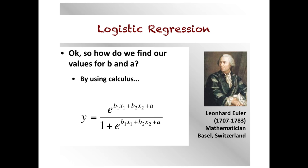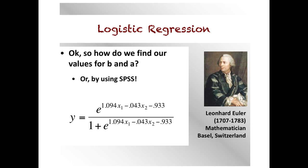To find our b and a values, we could use calculus, but instead we'll use SPSS — this is a psychology class. In SPSS, go to Analyze → Regression → Binary Logistic. The b1 value of 1.094 is the slope for x1 (family income) — positive, suggesting income has a positive relationship with being a gamer. The negative 0.043 applies to age (x2), suggesting as age increases you are less likely to be a gamer.